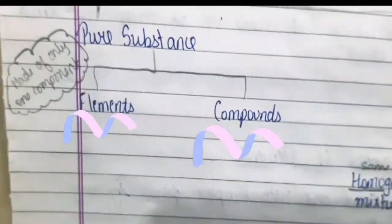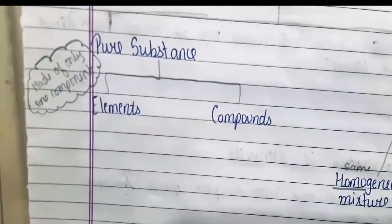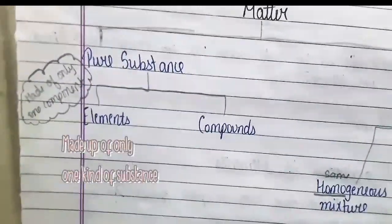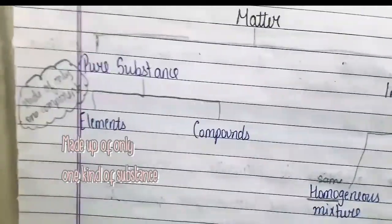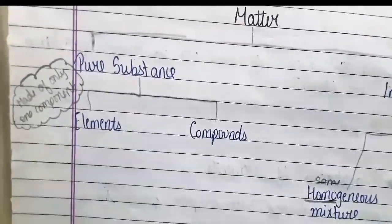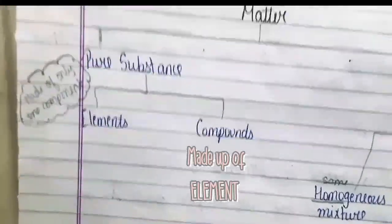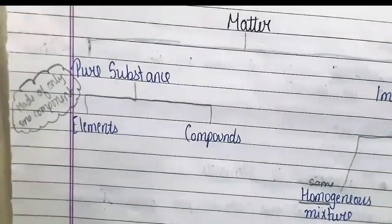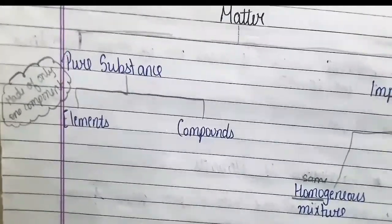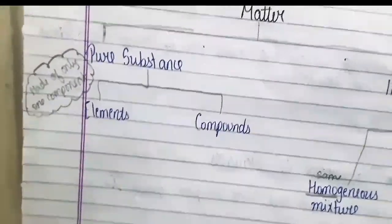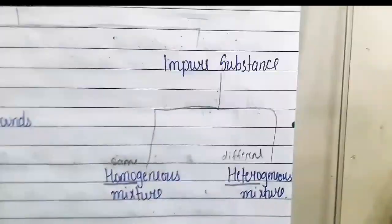Pure substance is further divided into two parts: elements and compounds. Elements are made up of only one kind of atoms. Compounds are made up of more than one kind of elements. We will understand everything in depth in the further chapter.